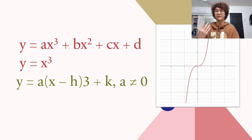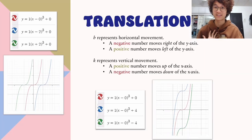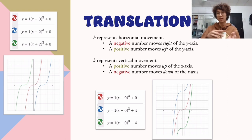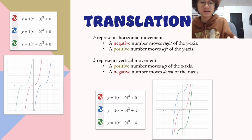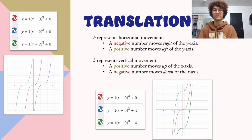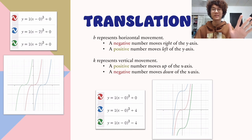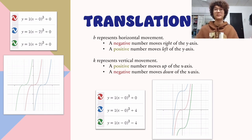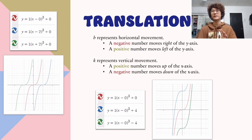Translation means moving the graph up, down, left, or right, and also changing the width. To move it left or right, adjust h. To move left, change h to a negative number; to move right, change h to a positive number.